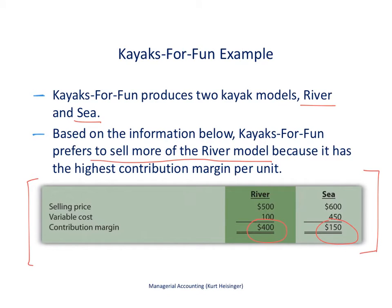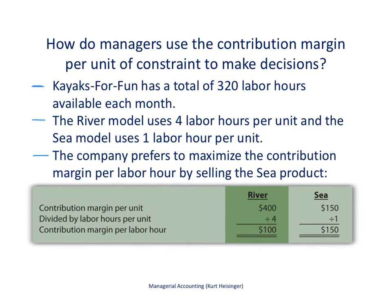In the next slide, we're going to look at what happens when we do have constrained resources and calculate the contribution margin per unit of constraint. Kayaks for Fun has a total of 320 labor hours available each month — that's the maximum number of labor hours that can be worked within their production facility. The river model uses four labor hours to produce one unit, and the sea model uses one labor hour to produce one unit. So the sea model uses far fewer labor hours per unit than the river model.